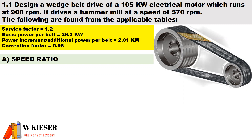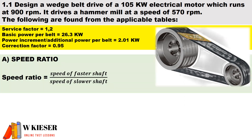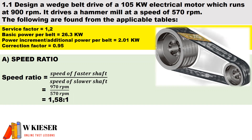In part a, we need to calculate the speed ratio. To determine the speed ratio it is the ratio of the speed of the faster shaft to the speed of the slower shaft. Therefore it's 970 revs per minute divided by 570 revs per minute, and we end up with a speed ratio of 1.58 to 1.